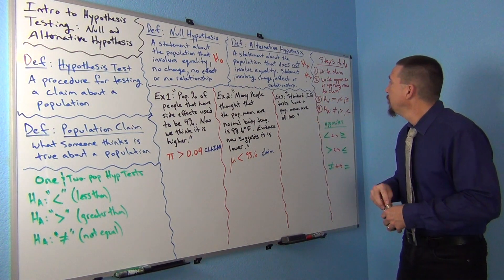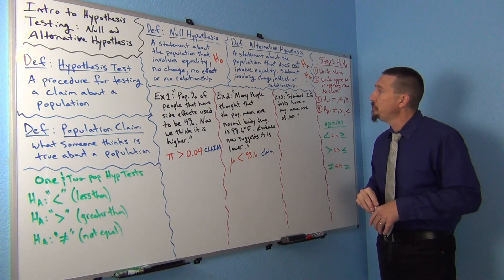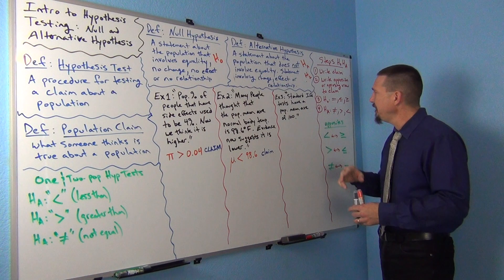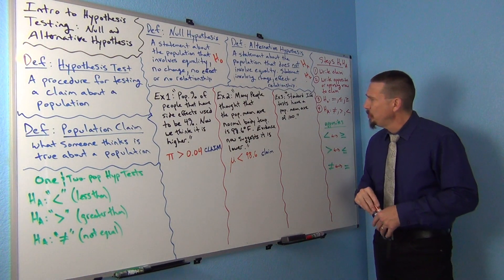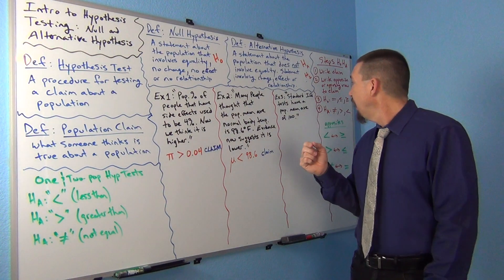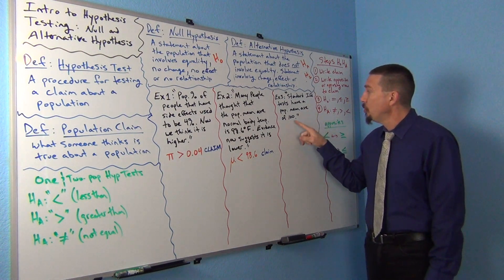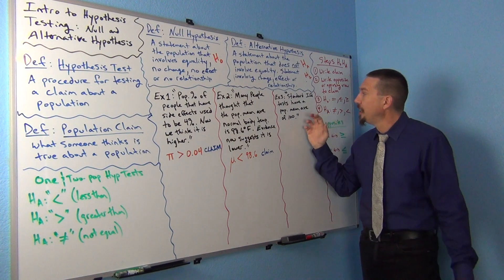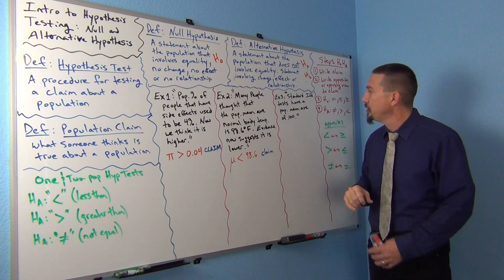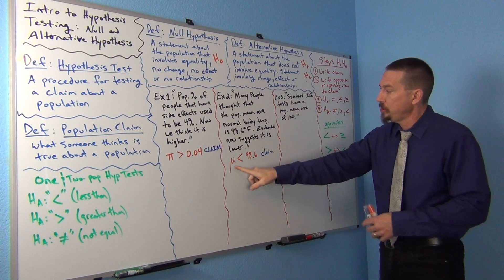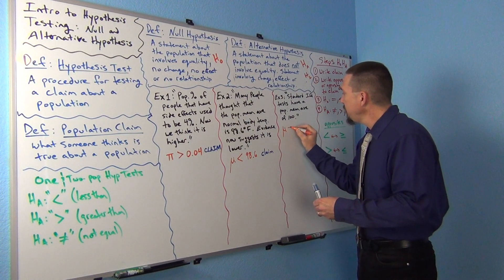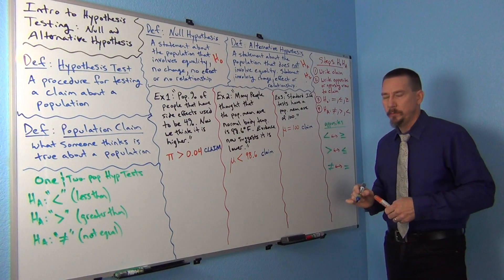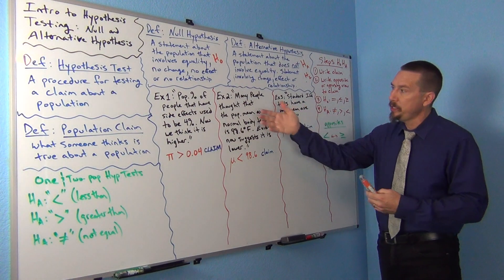The third example: standard IQ tests have a population mean average of 100. That's all they said. It didn't say more than 100, at least 100, at most 100, or less than 100 — it just said 100. So that's a classic equal-to claim. They're using a population mean average, so it's the Greek letter mu again, and the claim is mu = 100. That's what they think is true. A claim is something you have to read carefully to figure out what they actually think is true about the population.